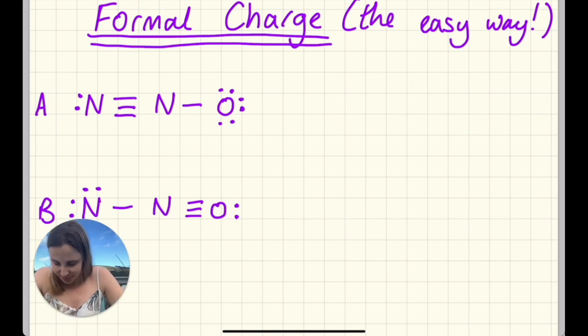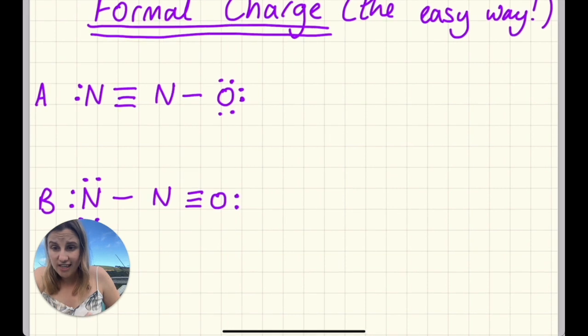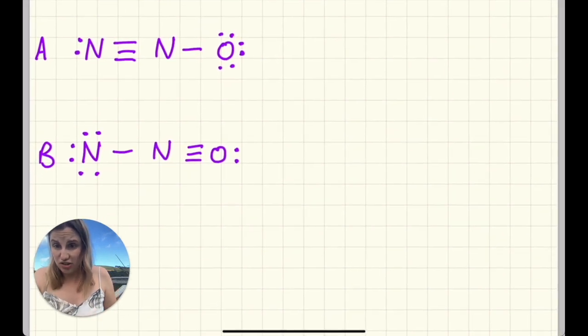Both of these, A and B, are valid Lewis diagrams. They both have complete octets. There's no problems with these whatsoever; they're both fine as Lewis diagrams. The question's really about which one is most stable, which one is preferred out of the two.